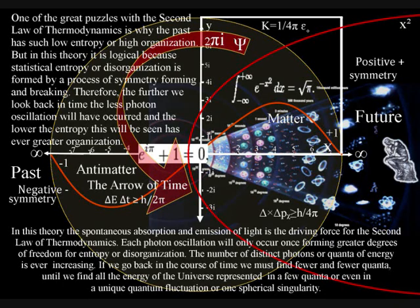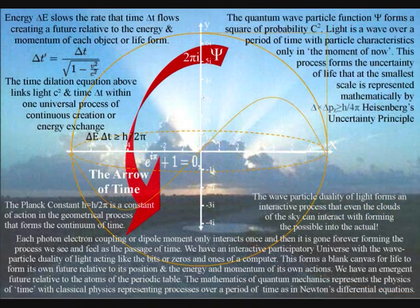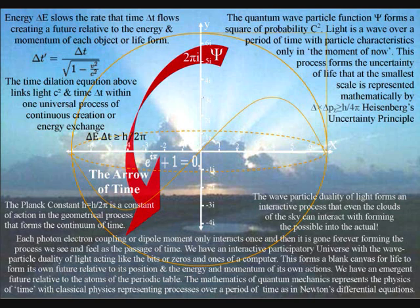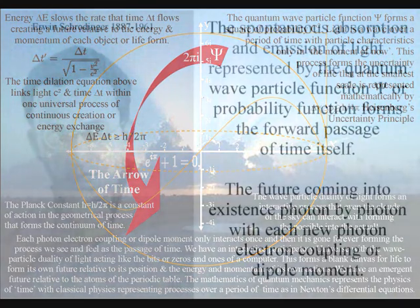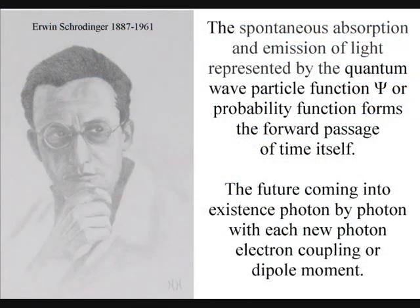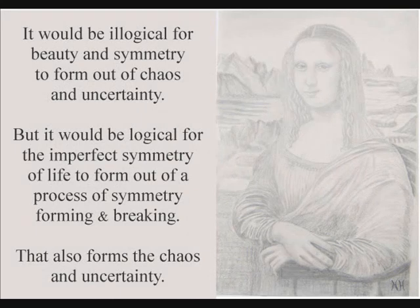If we take photon energy cascading down from the sun, each photon oscillation will only occur once, forming greater degrees of freedom for entropy or disorganization. Therefore, the further we look back in time, the less photon oscillations will have occurred, and the lower the entropy; this will be seen as greater organization or symmetry.